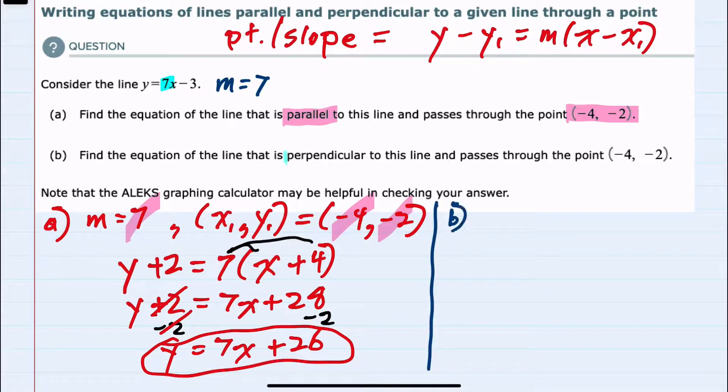For part B, we're told that the line is to be perpendicular to this line, so perpendicular means that our slope here will have to be the inverse reciprocal of 7, so negative 1 over 7 is to be our slope.